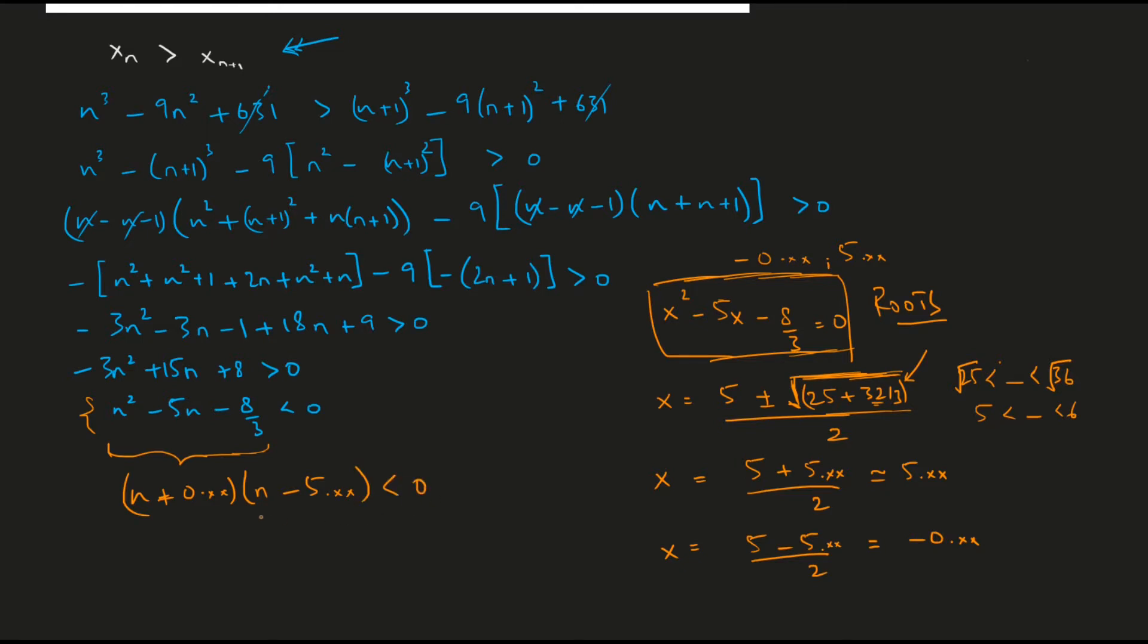Now I want to solve this inequality, and we know that the inequality would be negative when we take n to be a number between the two roots. So if n is in between negative zero point something and five point something, this entire thing would be negative. So the solution would be from negative 0.xx to 5.xx. Now I'm interested in finding the largest value of n for which this inequality would hold, and n must be an integer as well.